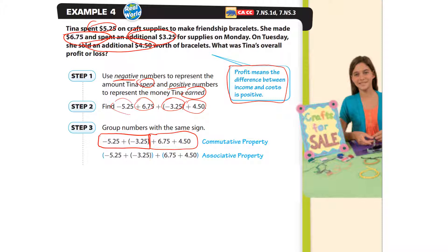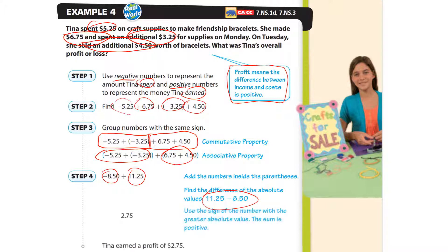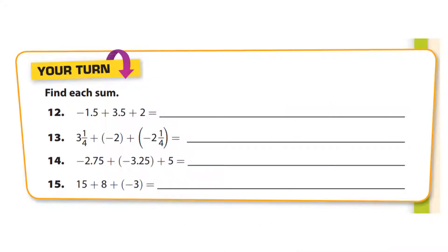Adding the amounts spent gives $8.50; adding the amounts earned gives $11.25. Since these have different signs, subtract them: $11.25 minus $8.50 equals $2.75. The overall profit is two dollars and seventy-five cents. Now find each sum on your own — the answers are: four, negative one, negative one, and twenty.